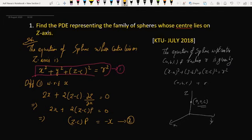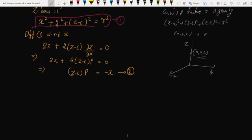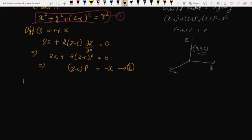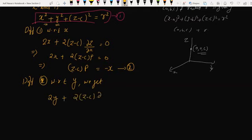Next, differentiate equation 1 with respect to y. We get 2y + 2(z - c)(∂z/∂y) = 0. Which implies (z - c)q = -y.